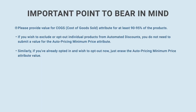Please provide a value for the COGS attribute for at least 90-95% of the products. If you wish to exclude or opt out individual products from automated discounts, you do not need to submit a value for the auto pricing minimum price attribute. Similarly, if you've already opted in and wish to opt out now, just erase the auto pricing minimum price attribute value.